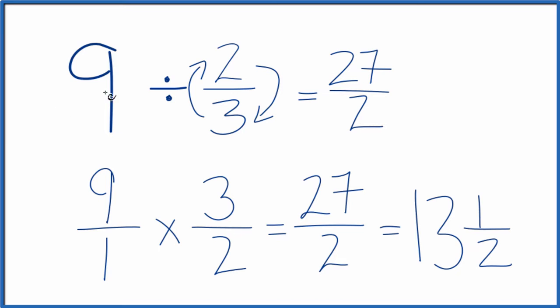So when you divide 9 by 2 thirds, you get 27 over 2, or you get 13 and one half. This is Dr. B. Thanks for watching.